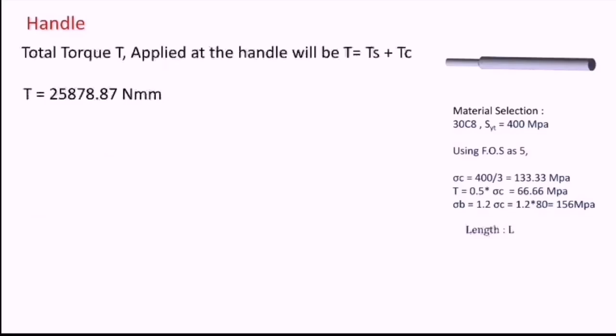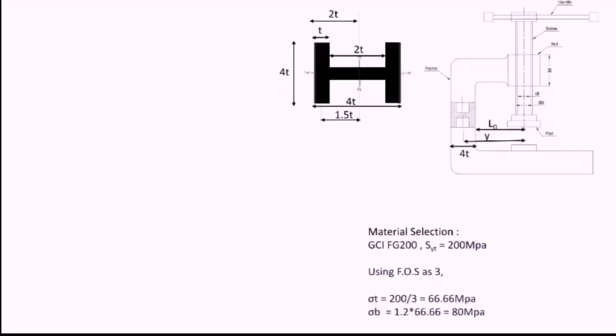Next part is the handle. For handle, we know that the torque to be applied will be addition of the total torques. Hence, the total torque applied will be T = Ts + Tc, which is 25878.87 Nm, which we have calculated earlier. This torque is also equal to force multiplied by length. Force we were given in the question as 250. On substituting the value, I will get the length of the handle as 120 mm.